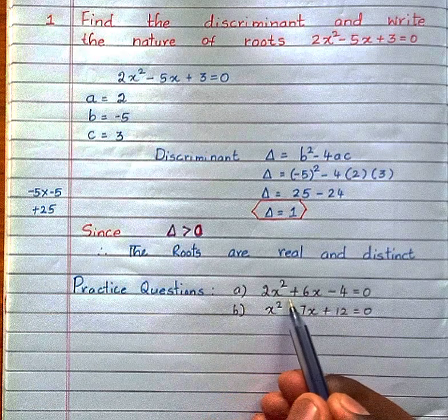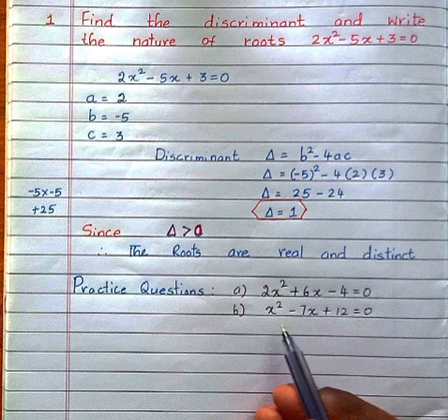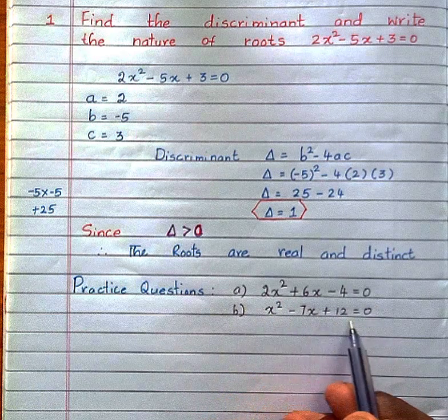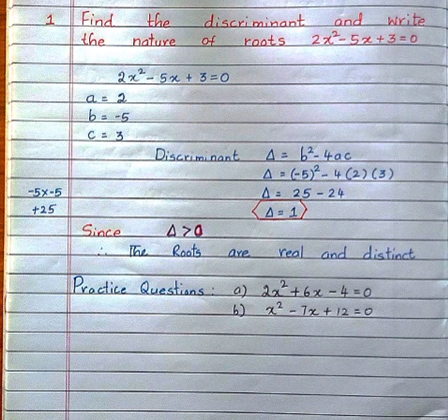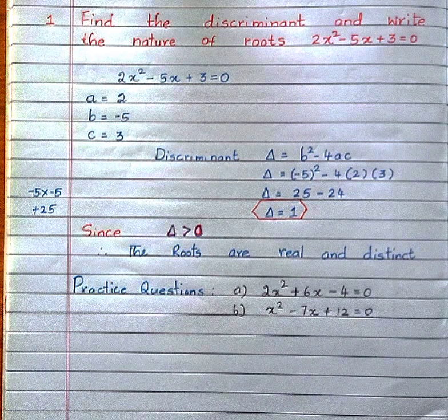Now practice question. Do practice and solve this question: 2x² + 6x - 4 = 0 and x² - 7x + 2l = 0.